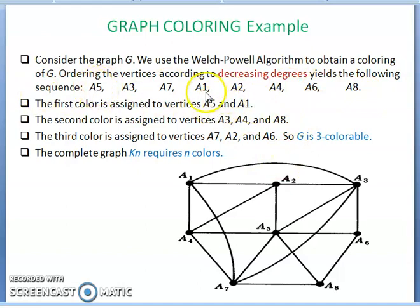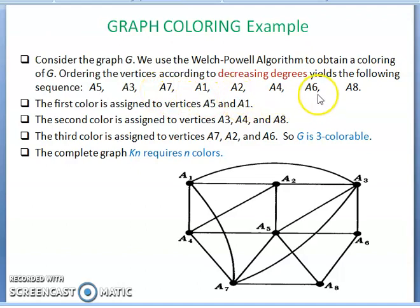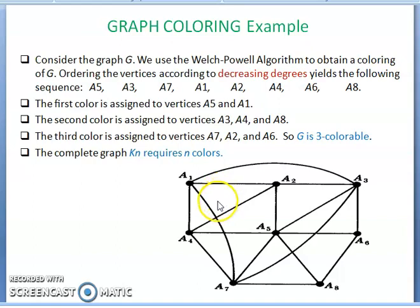All vertices are now covered: A5 and A1 are red; A3, A4, and A8 are green; A7, A2, and A6 are yellow. This graph requires three colors. The condition is that adjacent vertices do not have the same color.